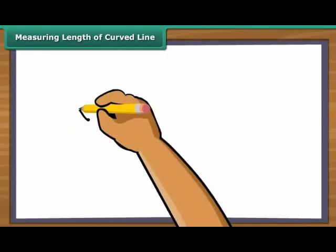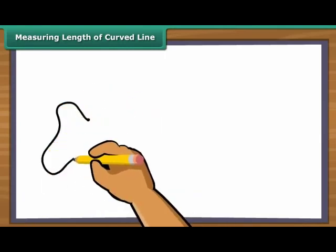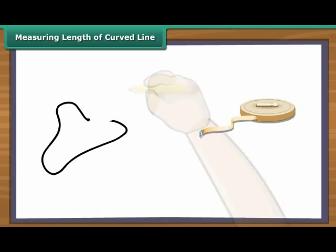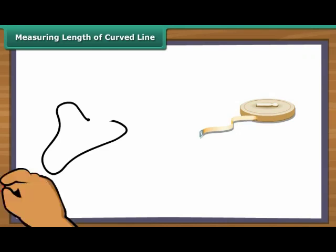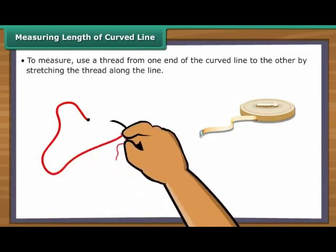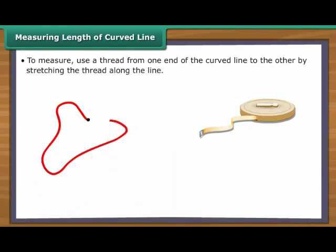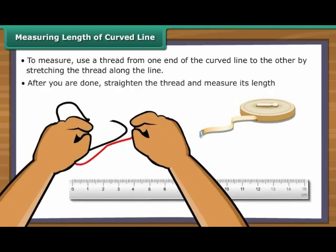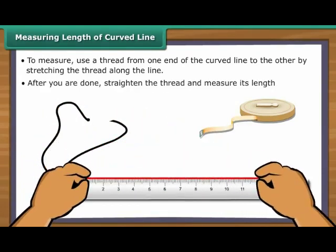Measuring Length of Curved Line. To measure a curved line, the standard measuring tape will not be enough. Use a thread along the curve from one end to the other, stretching it along the line. After you are done, straighten the thread and measure its length. You will know the length of the curved line accurately.